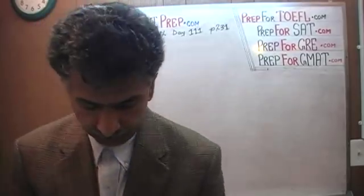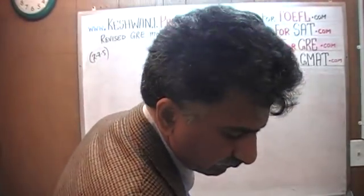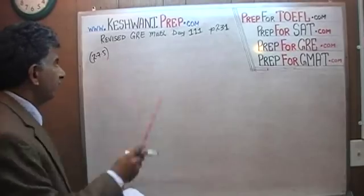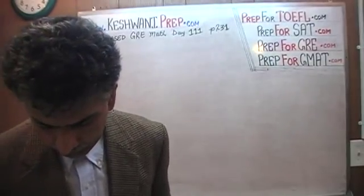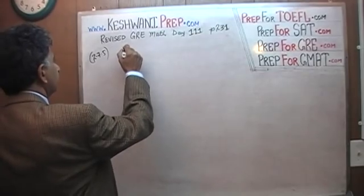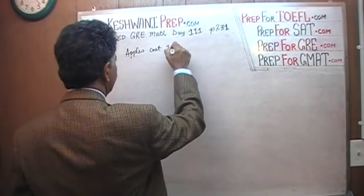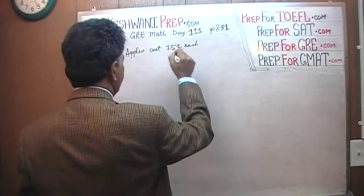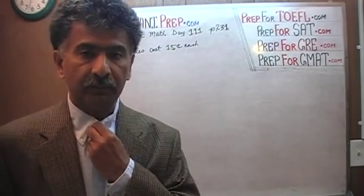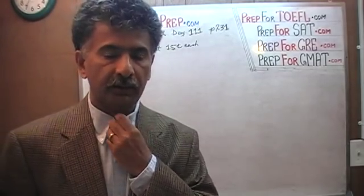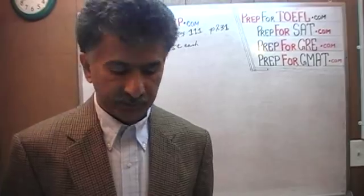Turn to page 231 and read the problem at the bottom of the page — problem number 2.7.5. It says that at a food stand, apples can be purchased for 15 cents each. In the book it says $0.15, which is very annoying. Convert everything into cents so we can avoid dealing with these annoying decimals. 15 cents.